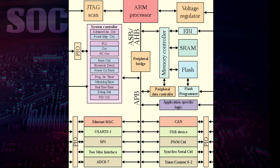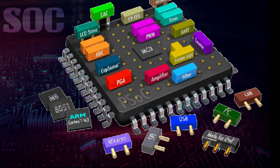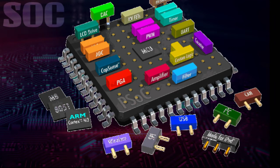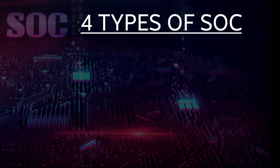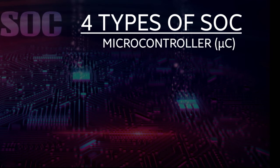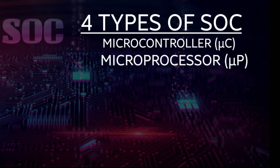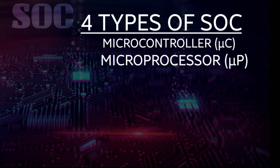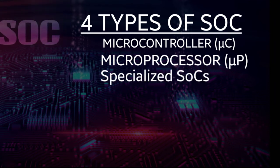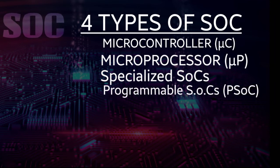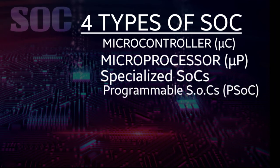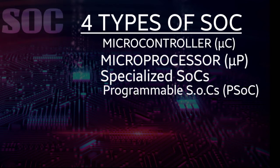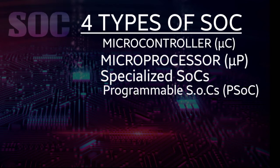As there are different types of devices, they can't have the same System on Chip. That's why there are types of SoCs. There are four types of SoCs: Microcontroller, found in embedded systems; Microprocessor, found in mobile computing; Specialized SoCs designed for specific applications; and Reprogrammable SoCs — here the name explains itself, though in this type most functionalities are fixed.